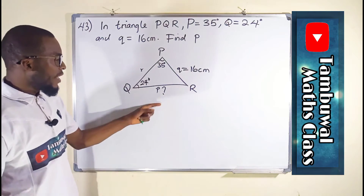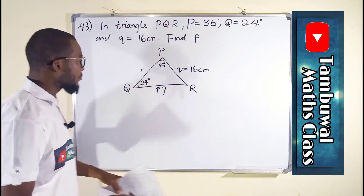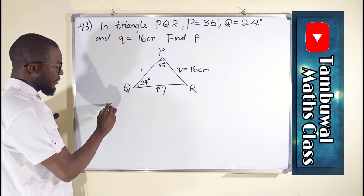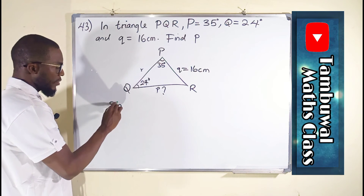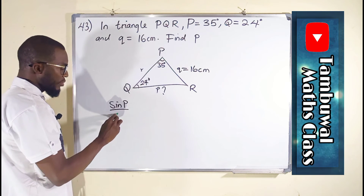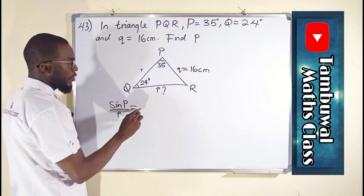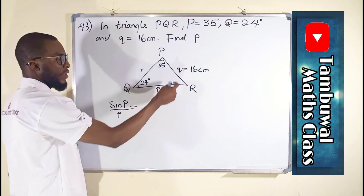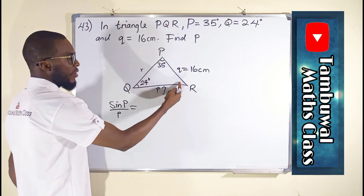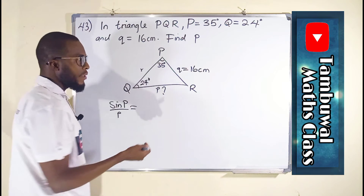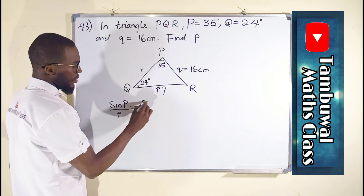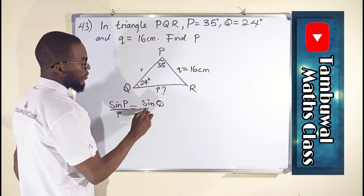To find this side, we can apply the sine rule. It says that sine P over small p is equal to sine Q over small q. We are not going to consider R because neither that angle nor that side are given, so we apply the sine rule to the two known pairs.